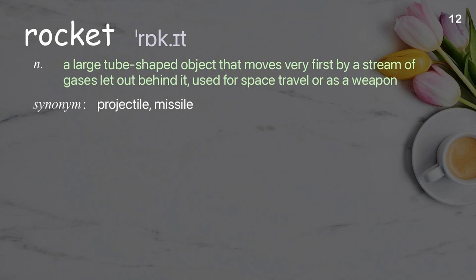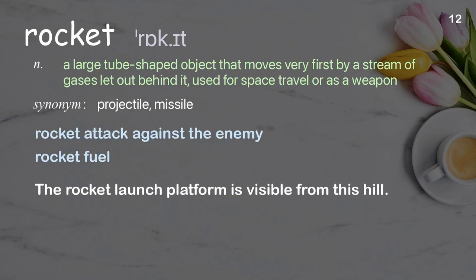Rocket. A large tube-shaped object that moves very fast by a stream of gases let out behind it, used for space travel or as a weapon. Examples: The rocket launch platform is visible from this hill.